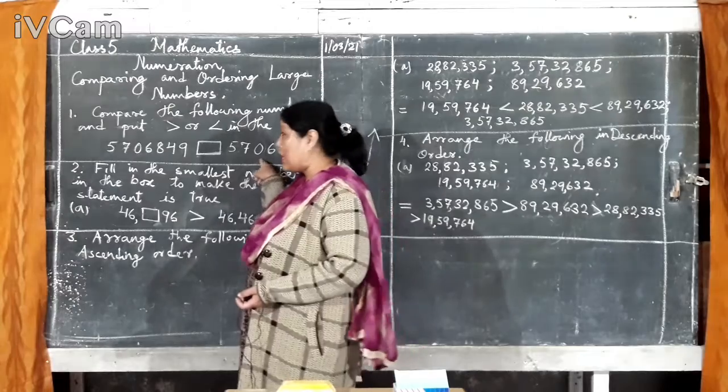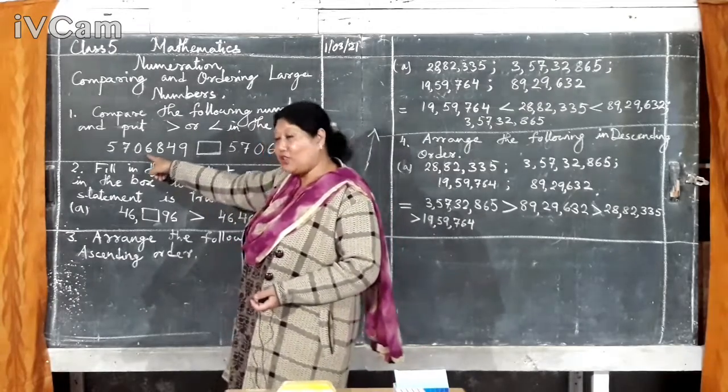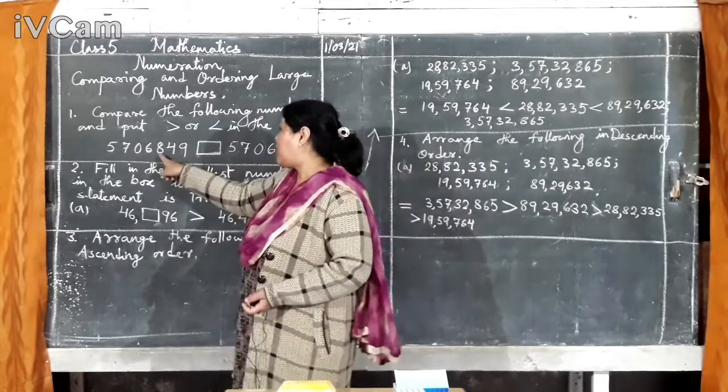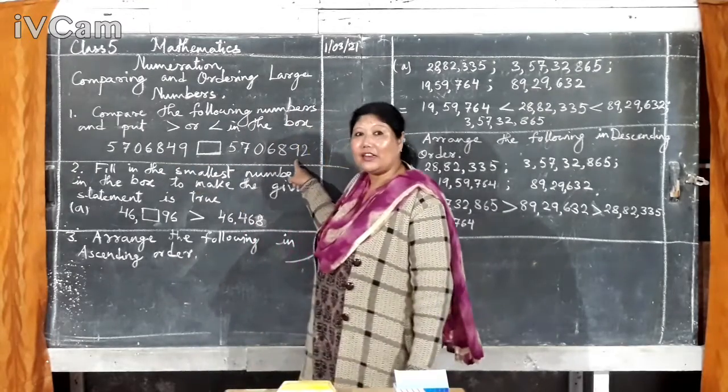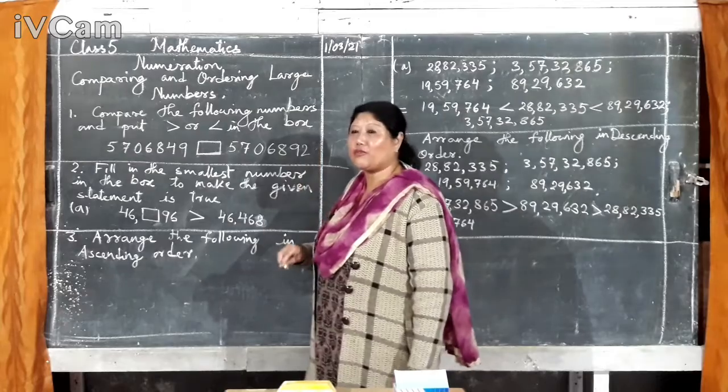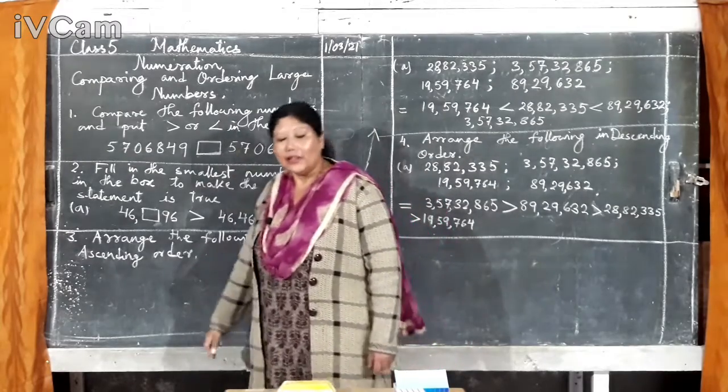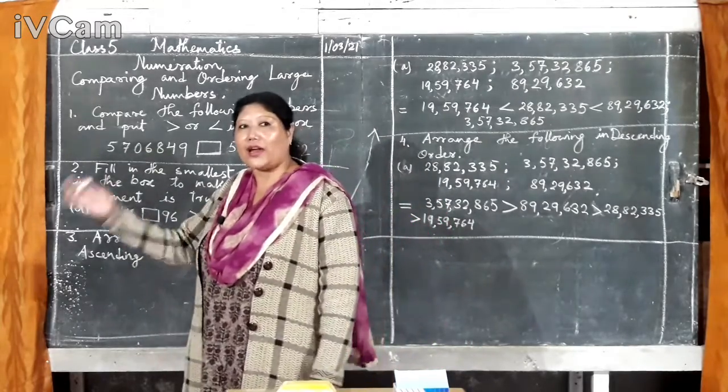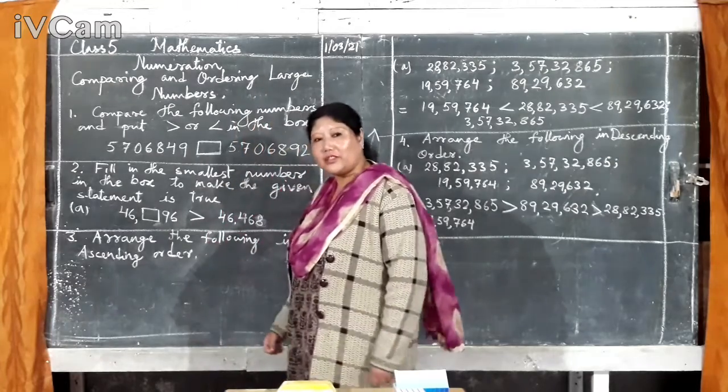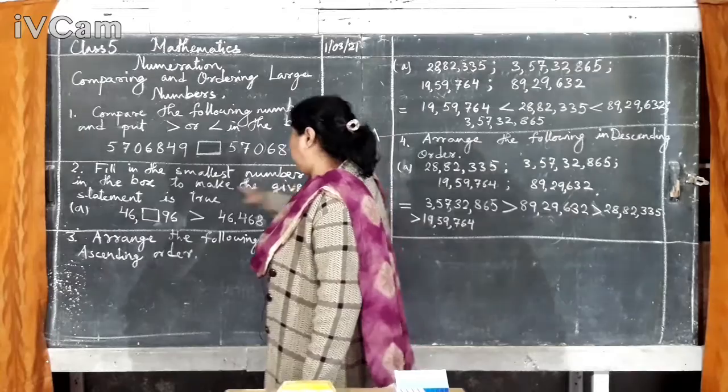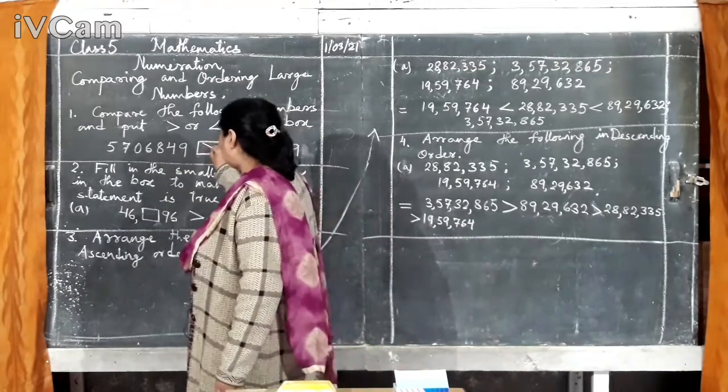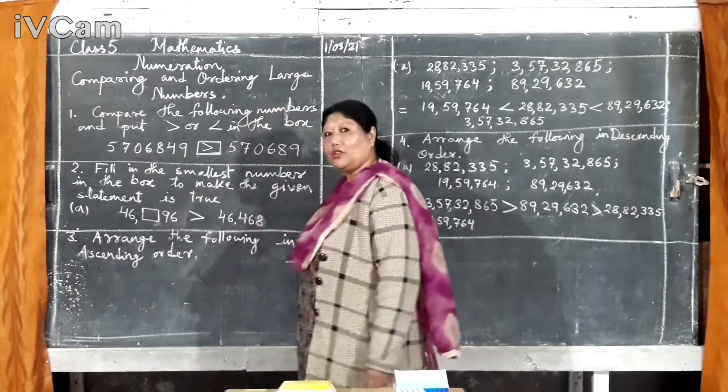5, 5, 5. Now, again, same. If it is same again, go for the second one. This is 7, this is 7. Again, same. Then, go for the third one. Like that. You carry on. Third one. Third is also same. Now, fourth one. Fourth is also same. 6, 5, 8, 6, 4, 8, 9. So, which one is bigger? This side is bigger.